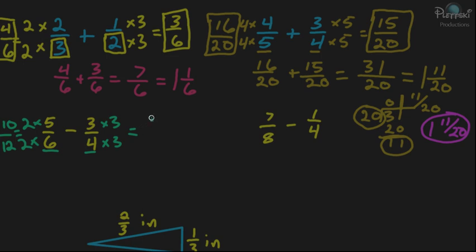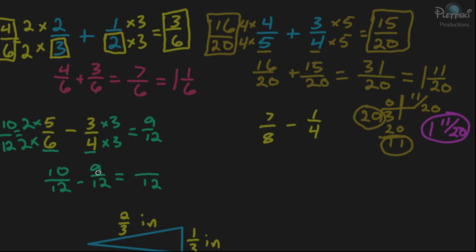So our problem becomes 10 over 12 minus 9 over 12. You leave the denominator the same, so it stays 12, and then you subtract the numerators: 10 minus 9, and you're left with 1 over 12.